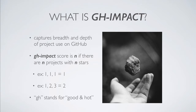GH Impact is a number that is designed to capture both the breadth and depth of an account's project popularity on GitHub. The GH Impact score is a number, n, if there are the same number of projects with that number of stars.